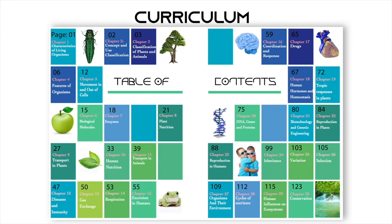Now let's look at the curriculum. I have divided the IGCSE curriculum into 30 topics — small topics so you can learn them quickly. The information is classified, meaning no overlapping topics. If you're studying enzymes, you'll have all the information about enzymes in one separate chapter. Other textbooks usually compile different topics together, but here you have 30 small, distinct topics that you can easily learn and then practice straight away from the past paper books.